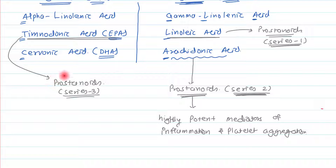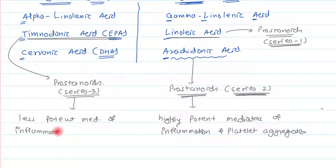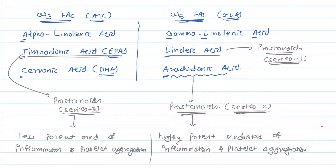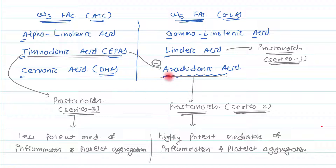Series-3 prostanoids are less potent mediators of inflammation and platelet aggregation. In addition to this difference in potency, timodonic acid also inhibits the release of arachidonic acid from its respective phospholipid.